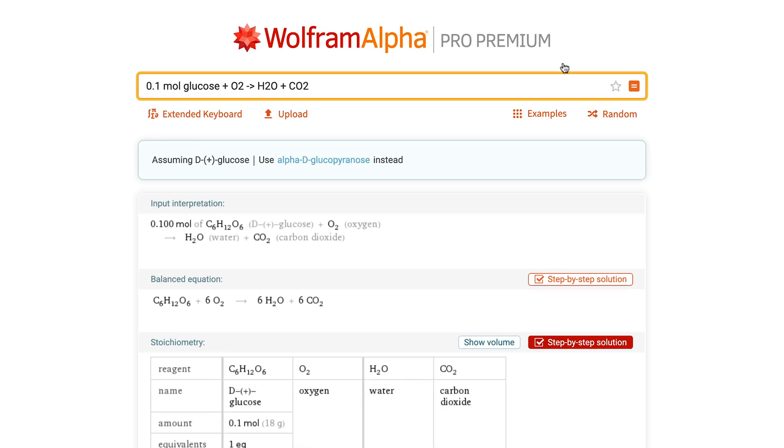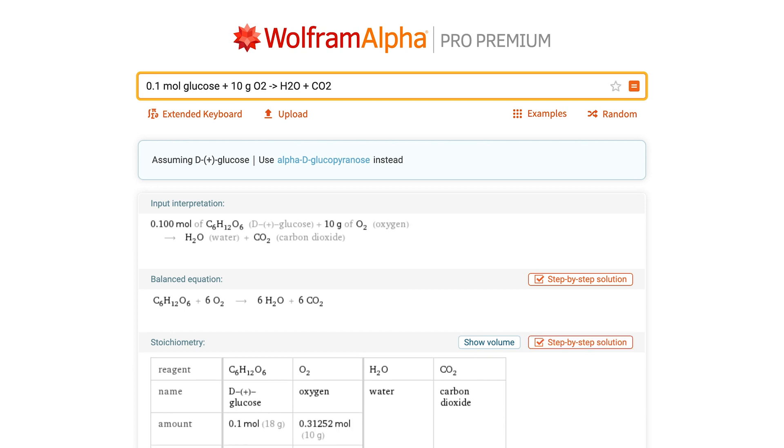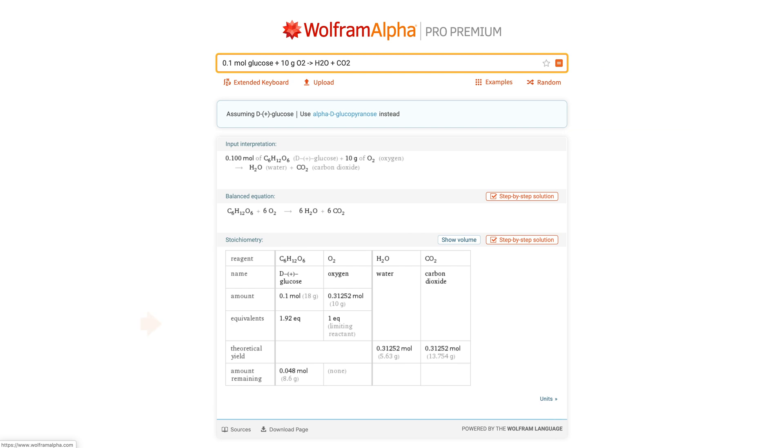If the initial amounts of two or more reactants are provided, for example, 0.1 mol glucose plus 10 grams O2, arrow H2O plus CO2, Wolfram Alpha identifies the limiting reagents in addition to providing the yield and the amounts of other reactants necessary.